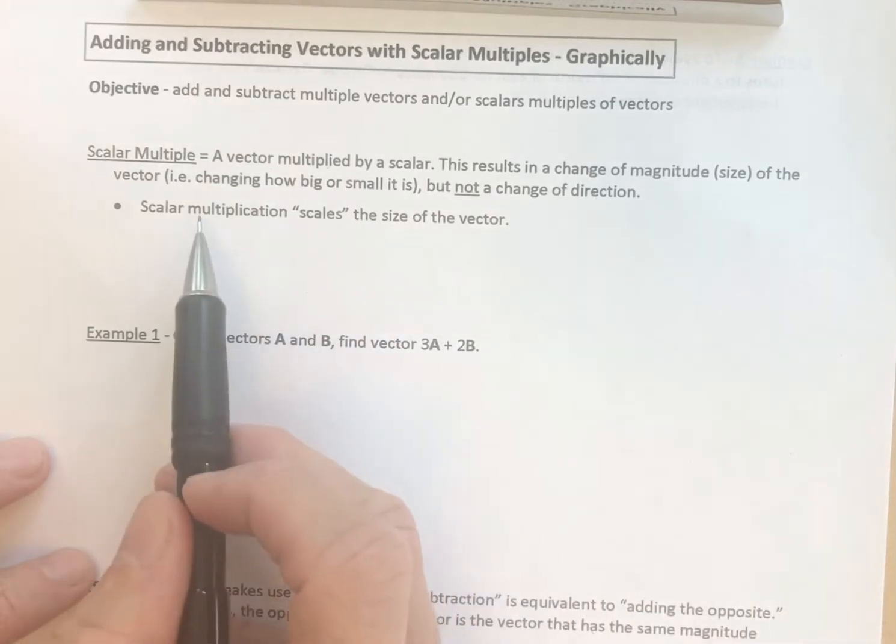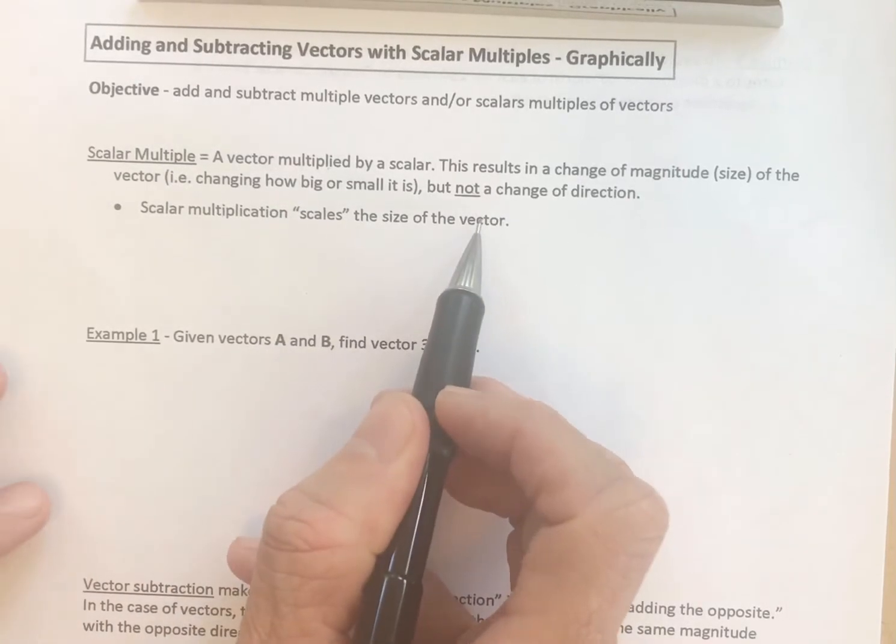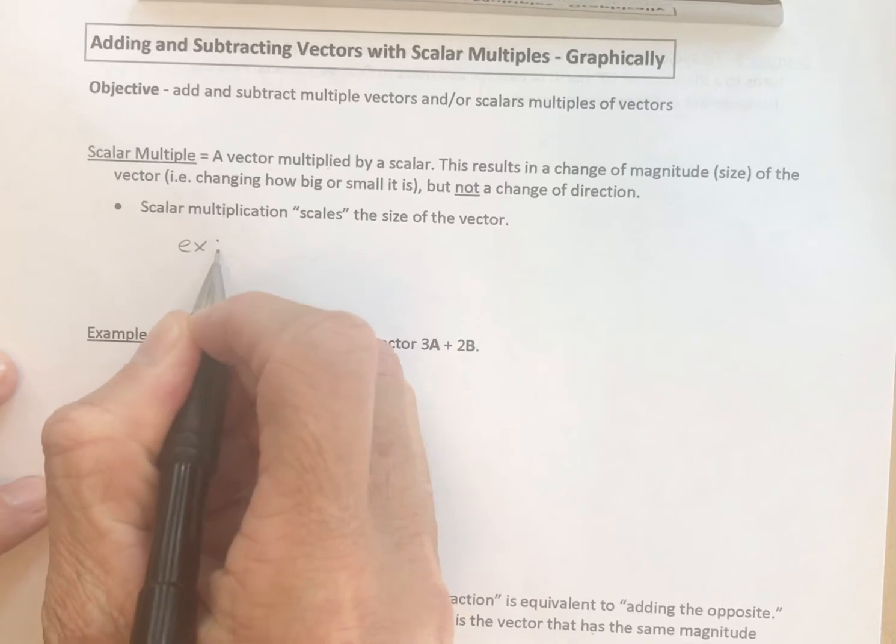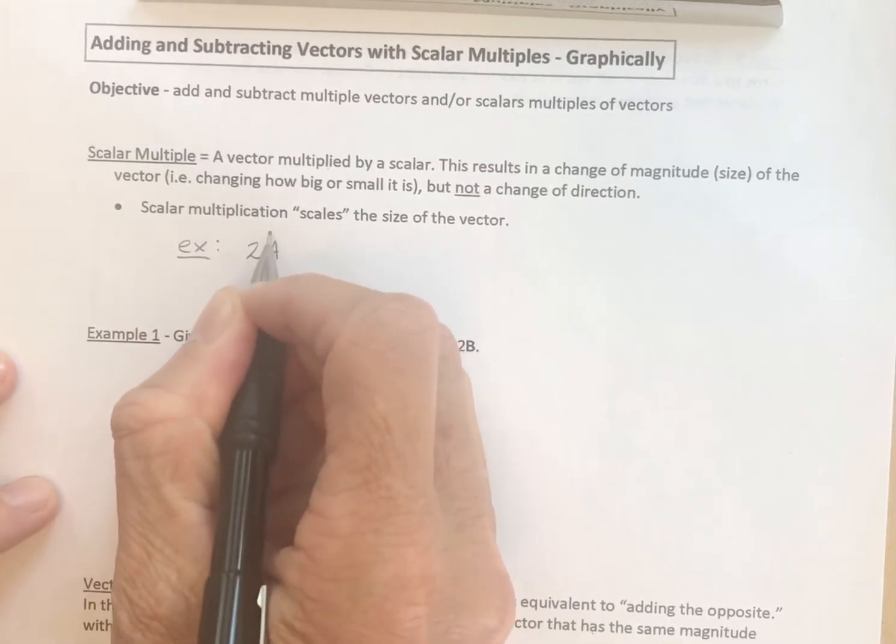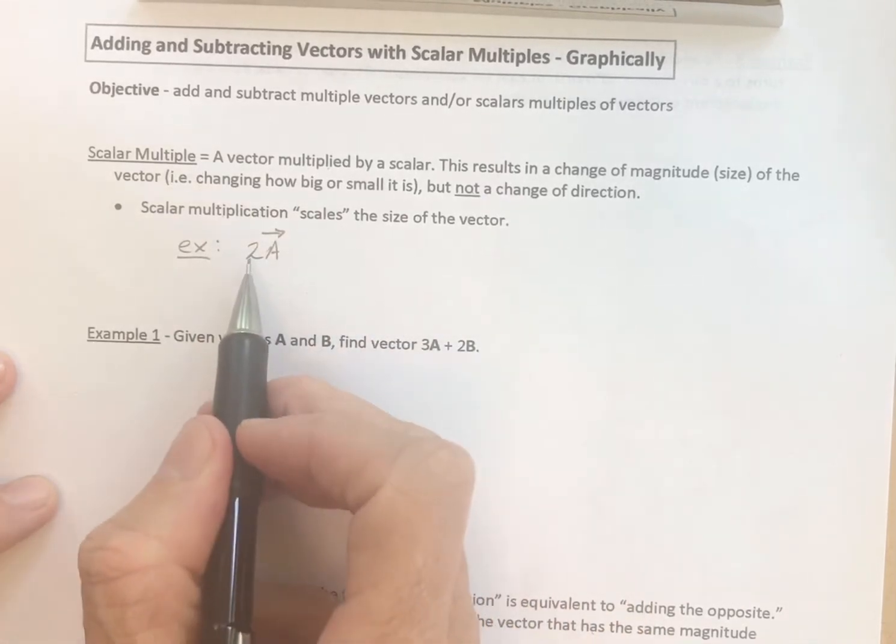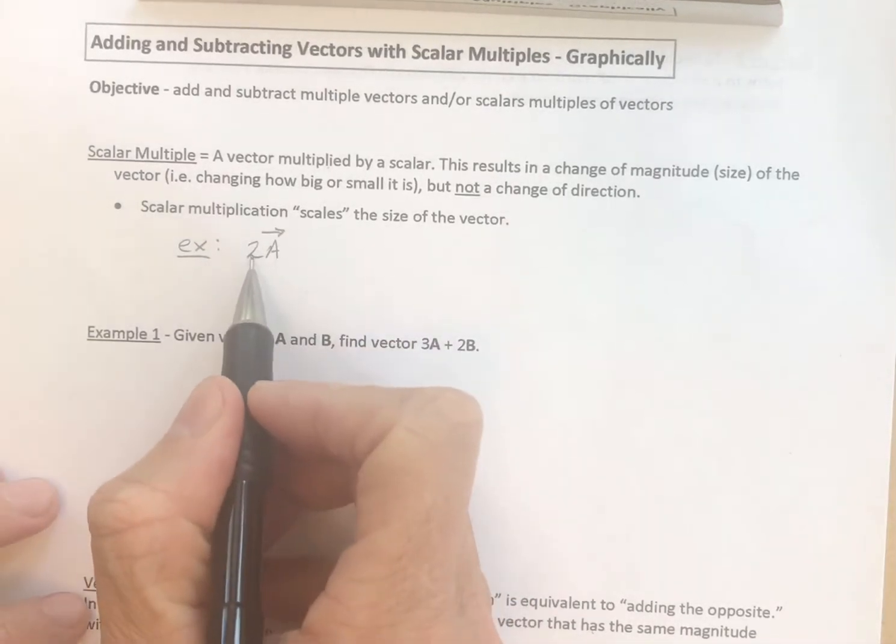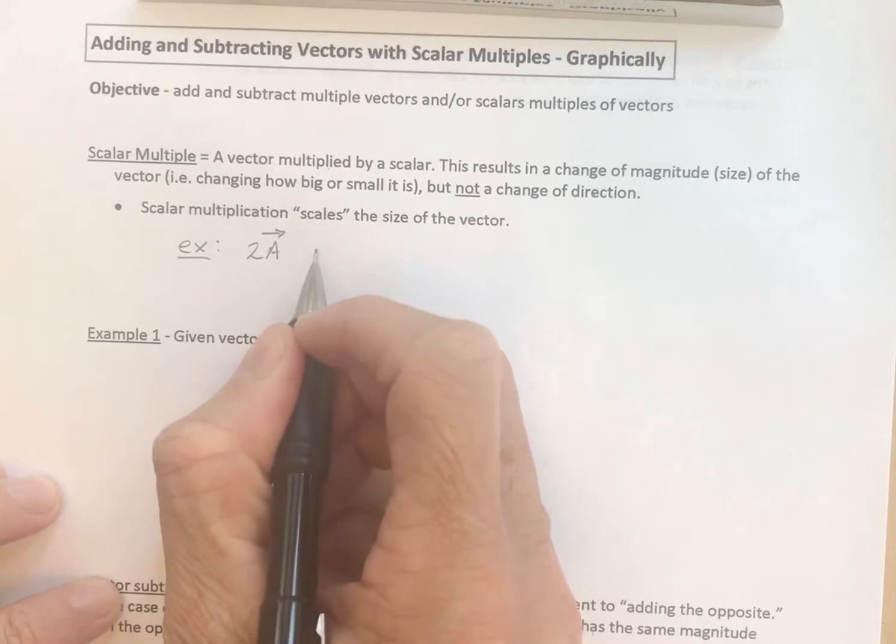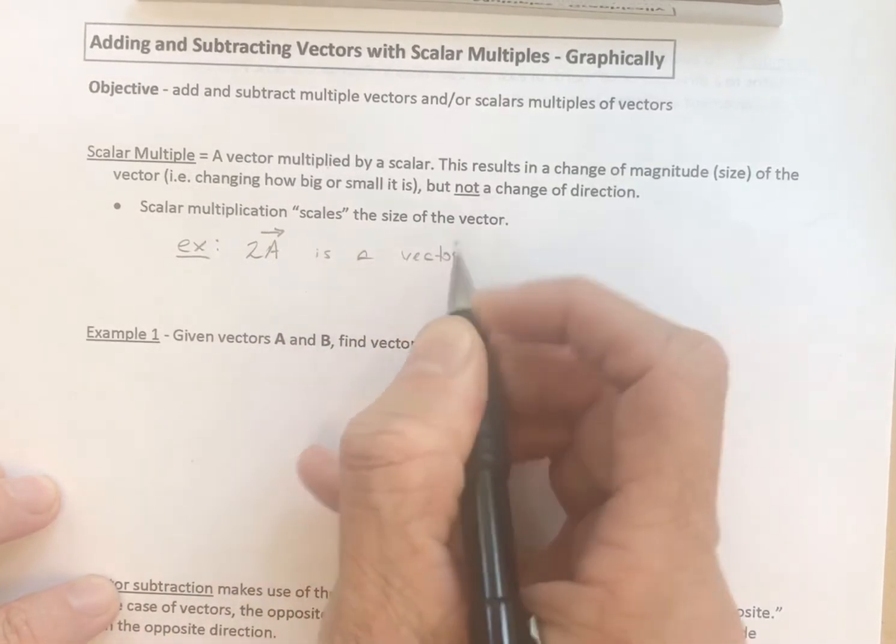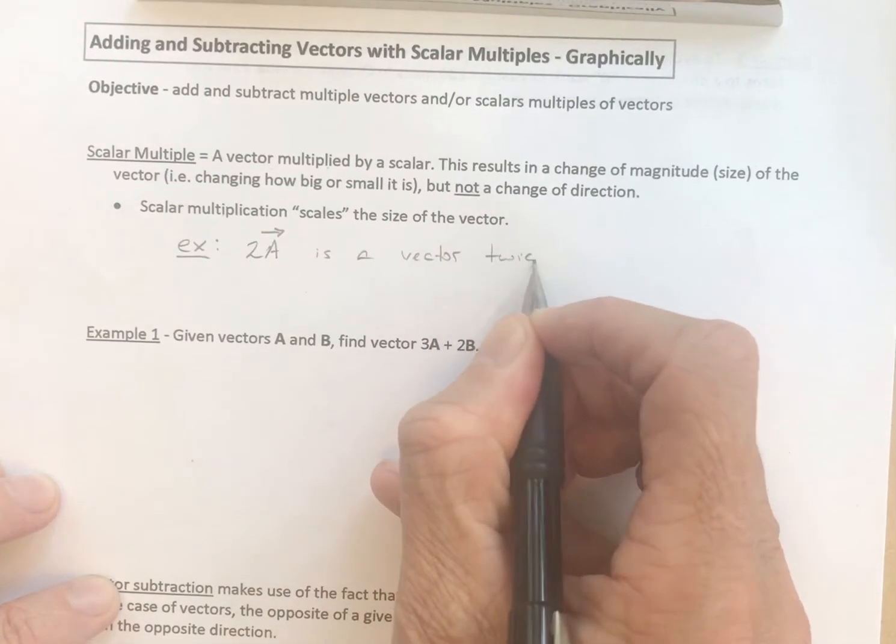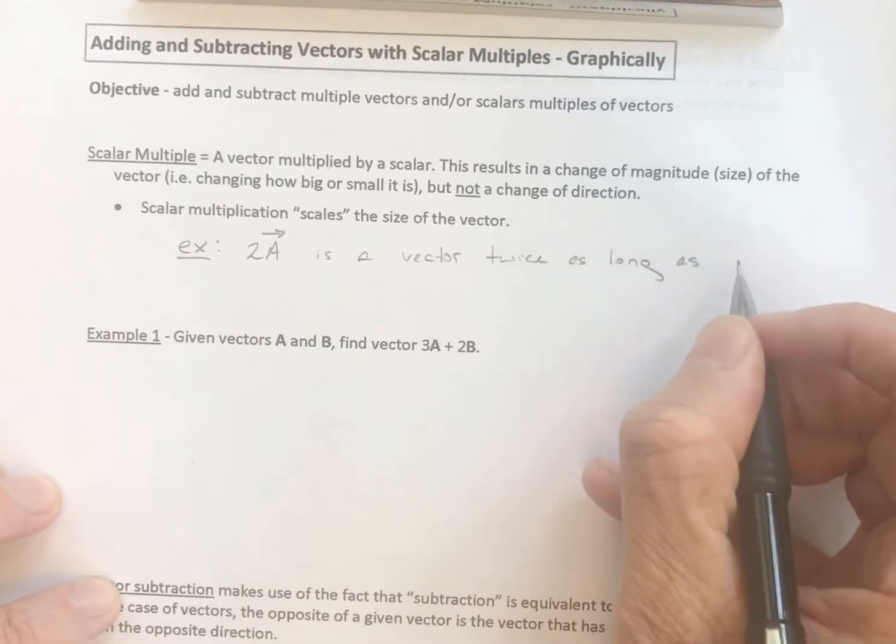So you can think of scalar multiplication as scaling. You scale the size of the vector. Let's get an example in here for you. For example, 2 times the vector a. So here is the scalar 2. Remember, scalar is just a number. This is twice vector a. So 2a is a vector twice as long as the vector a.